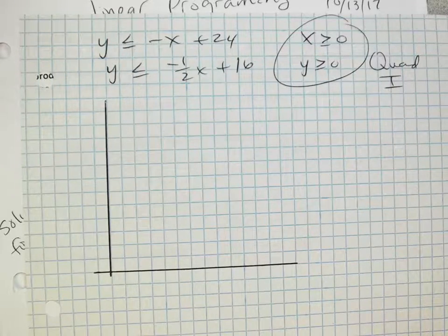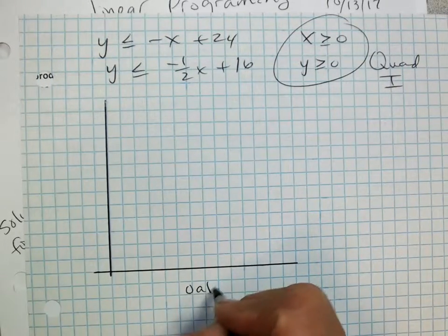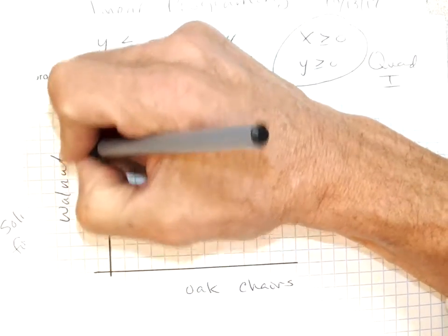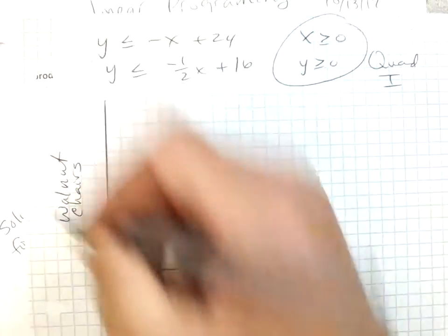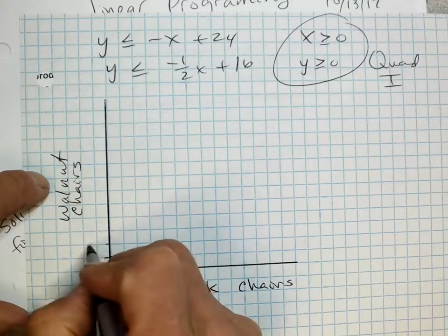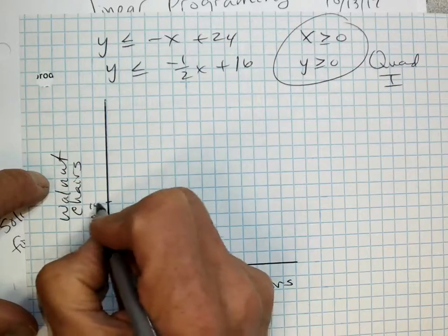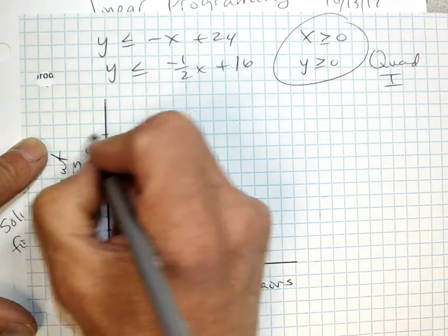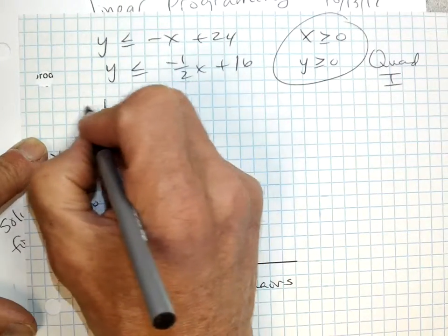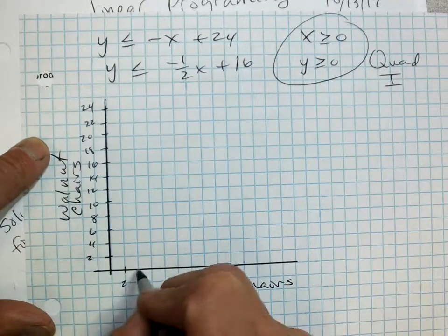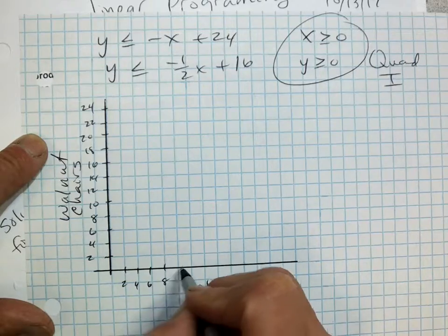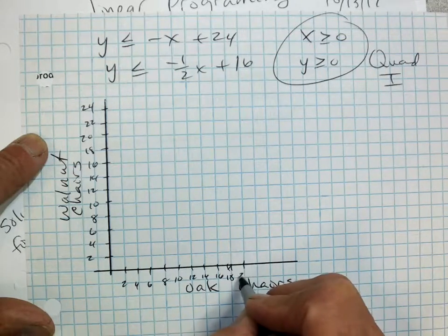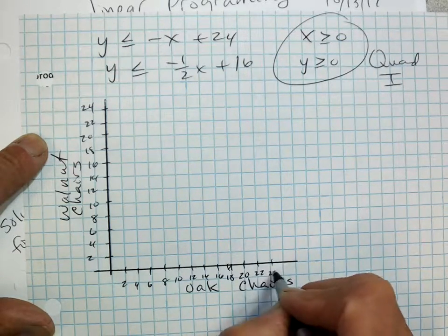So x represents oak chairs and y represents walnut. If I go by twos, I think I can fit everything in there. 2, 4, 6, 8, 10, 12, 14, 16, 18, 20, 22, 24.